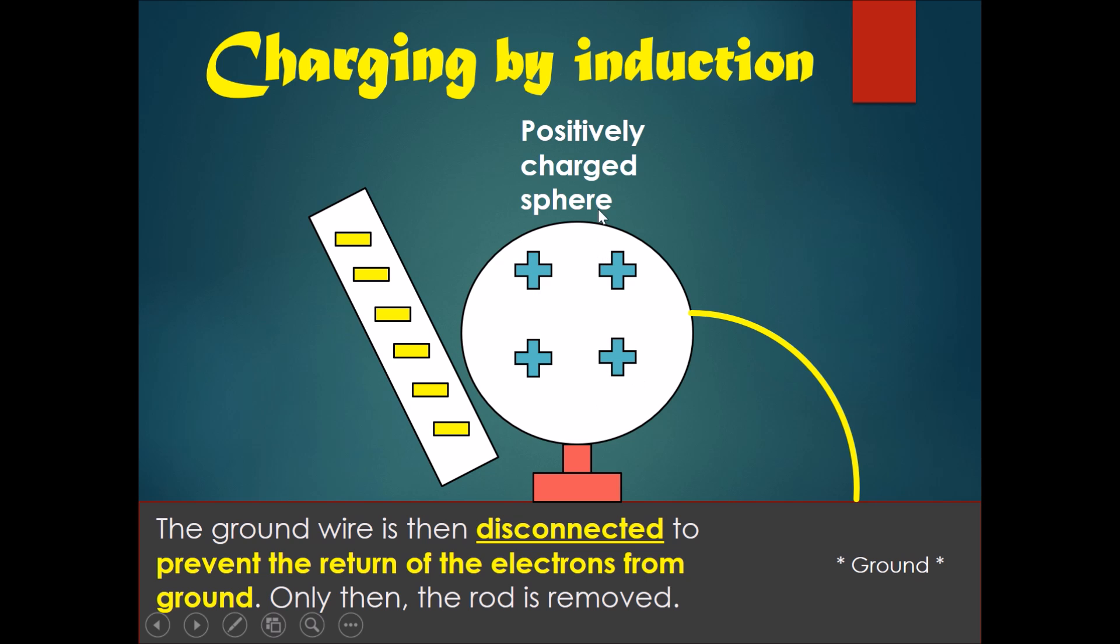So now the sphere is positively charged, and the ground wire is then disconnected to prevent the return of the electrons from the ground. Only now is the rod removed.